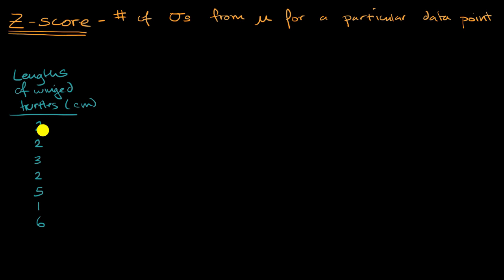And from this, I encourage you at any point, if you want, pause this video and see if you want to calculate. What does the population mean here? We're assuming that this is the population of all the winged turtles. Well, the mean in this situation is going to be equal to, you could add up all of these numbers and divide by seven. And you would then get three.